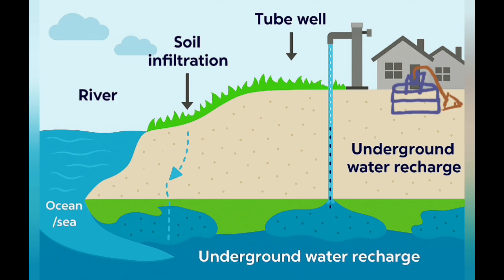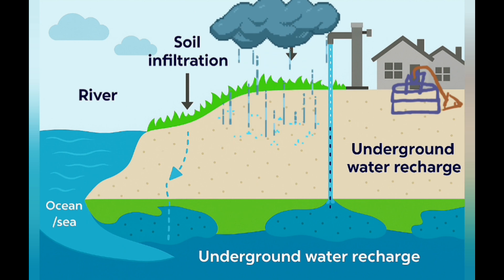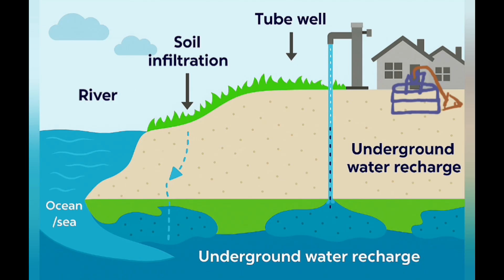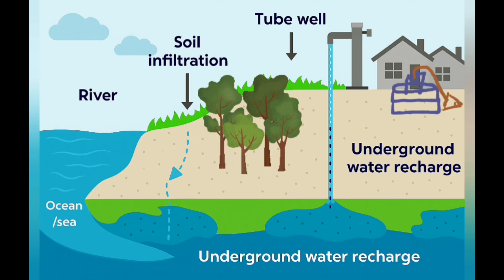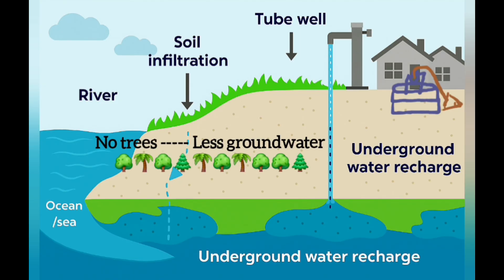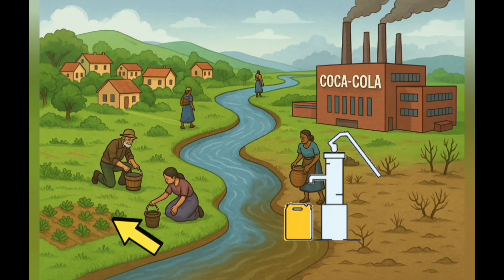For more water to recharge into the ground, there should be enough rainfall and plenty of trees and vegetation. Without trees and vegetation there is less chance for groundwater — no trees means less groundwater. We use water in many ways: for agriculture, for drinking water, and for industries.